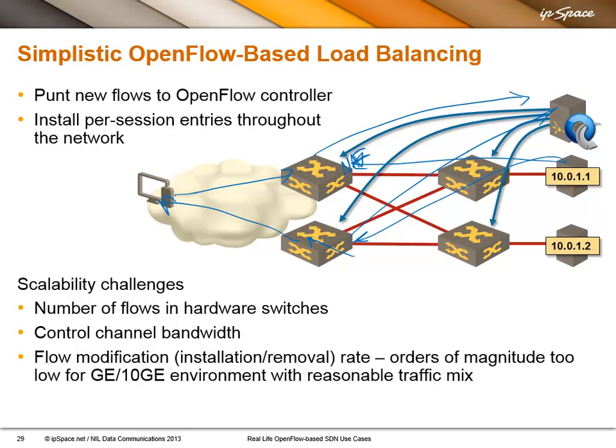This doesn't work in practice. You are severely limited by the number of flows in the hardware switches. NEC supports 100,000 flows in their switches — even that is not enough for large-scale load balancer deployments. I have statistics from one pretty large website where they had 400,000 TCP sessions on a single Linux box with two 10-gig ports. You cannot expect to do the same thing with 100,000 flows in a switch that has way more bandwidth than just 10-gig. Then of course you are severely limited by the bandwidth between the OpenFlow controller and the switches, and the flow installation rate, which is orders of magnitude too low for any reasonable 1-gig or 10-gig environment with realistic traffic mix. This is a pure academic exercise that does not work in practice.